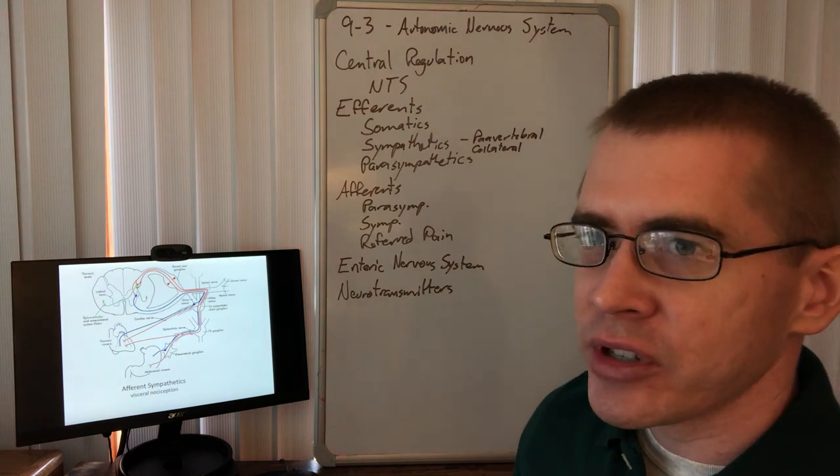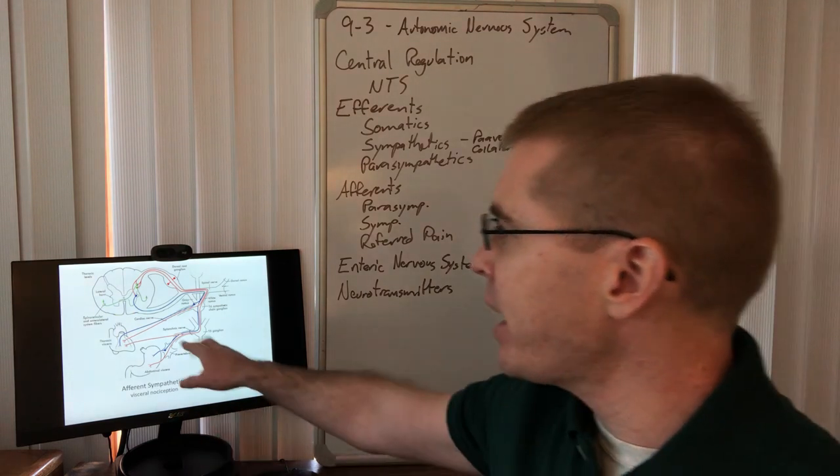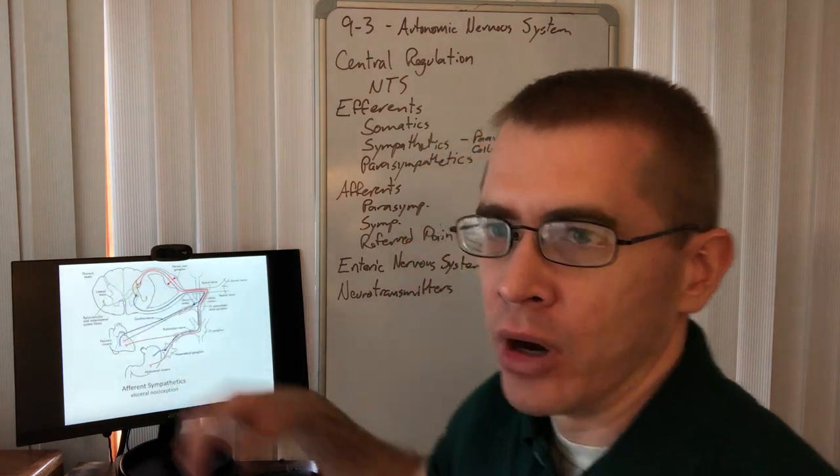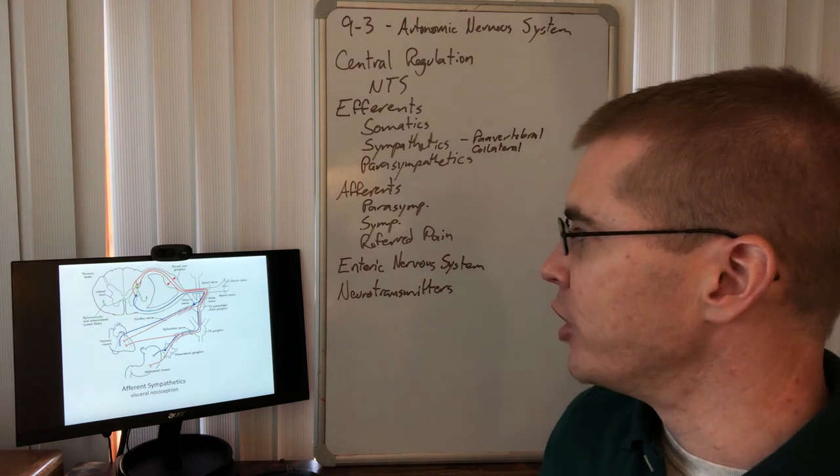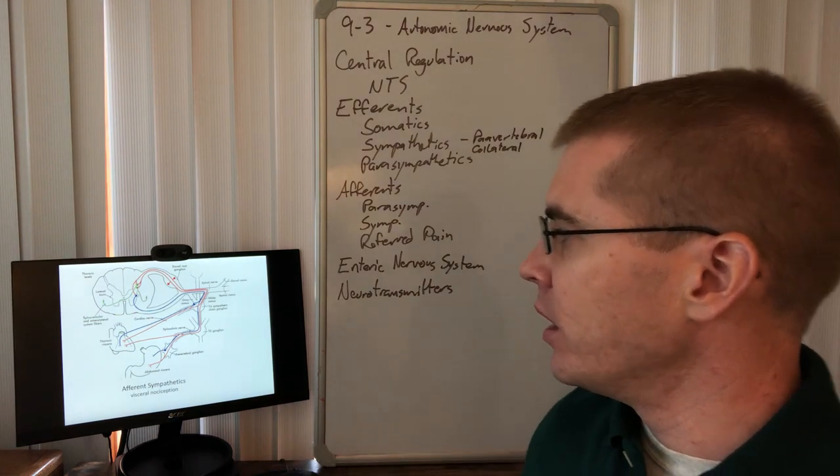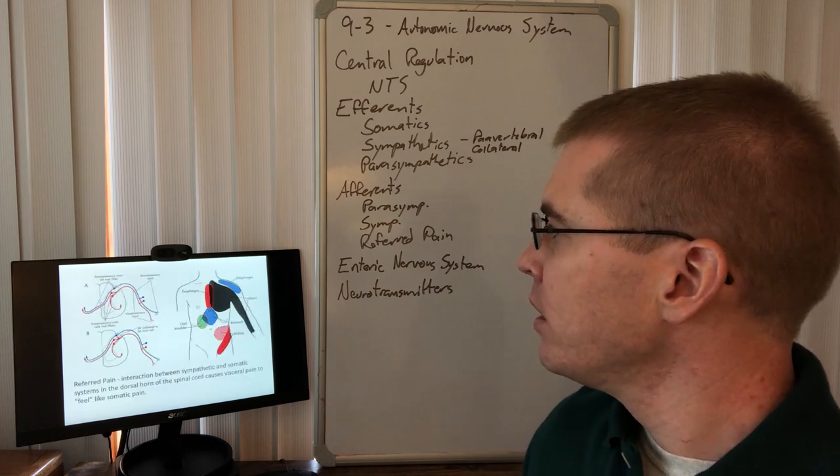So what do the afferent sympathetics look like? They look very similar, except that these GVAs are traveling through the posterior rootlets. So you can see there these visceral nociceptors from the sympathetics.